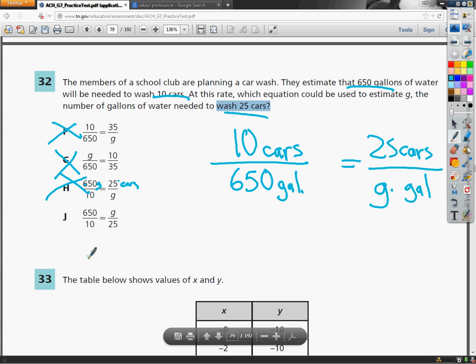And in this case, 650 gallons is on top, that's fine. Gallons on top as well. 10 cars, 25 cars. J is the correct answer.